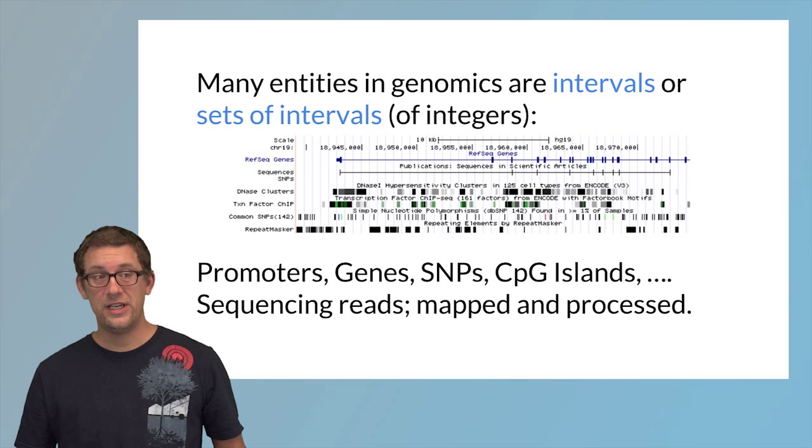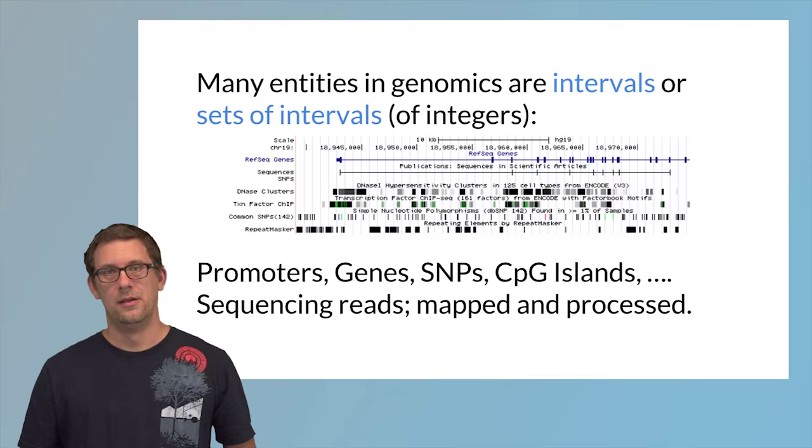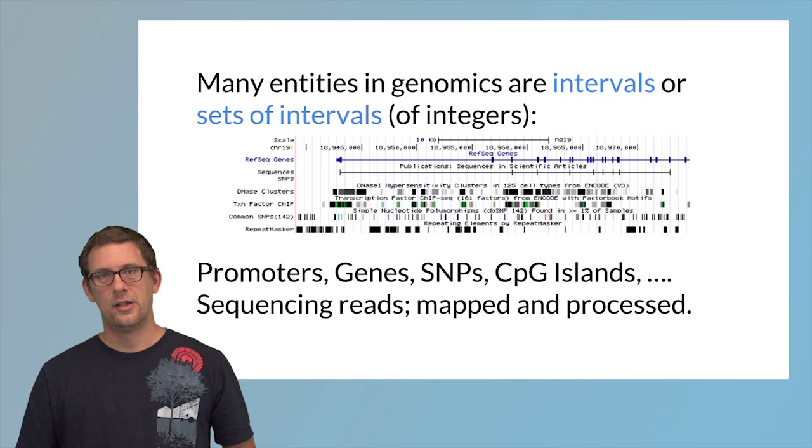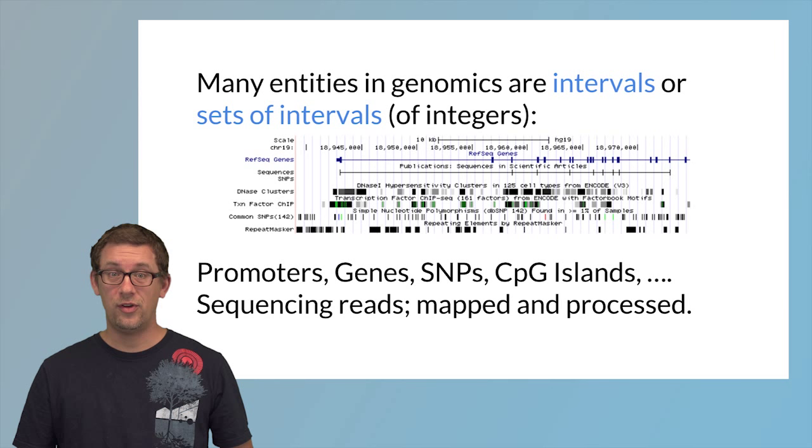Promoters, genes, single nucleotide polymorphisms, which are really intervals but consist of only a single base, CpG islands, but also data such as next-generation sequencing reads after they have been mapped. Once a read has been mapped to the genome, it's an interval.